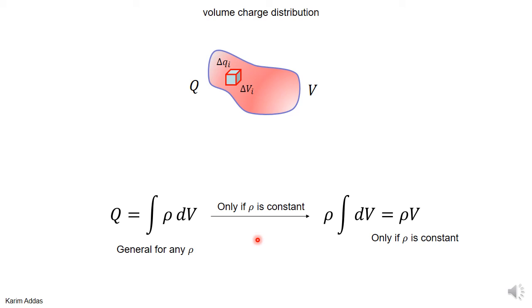If it happens that ρ is constant, then you can take it outside of the integration. In that case, you have ρ times the integration of dV. Integration of dV is just the total volume, so only when ρ is constant can you use the much simplified formula Q = ρV. But remember, this is only the case when ρ is constant.